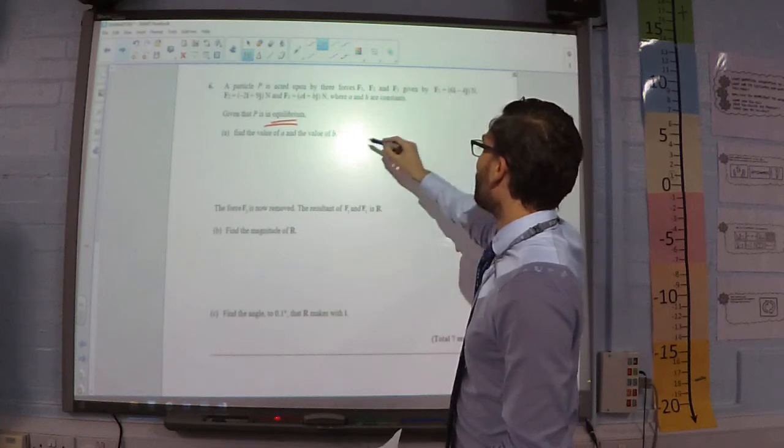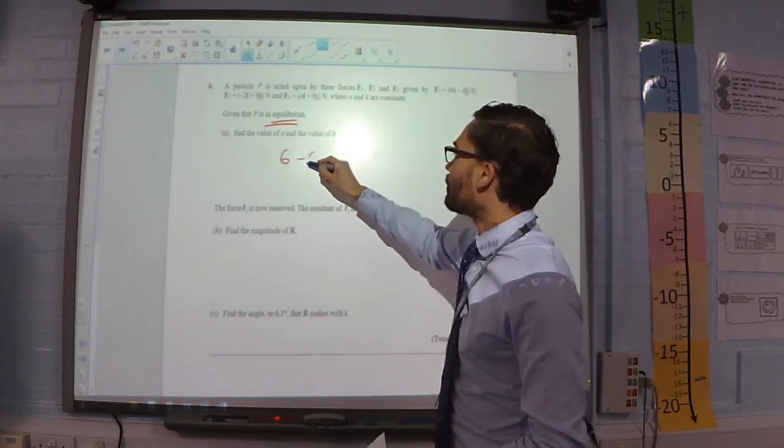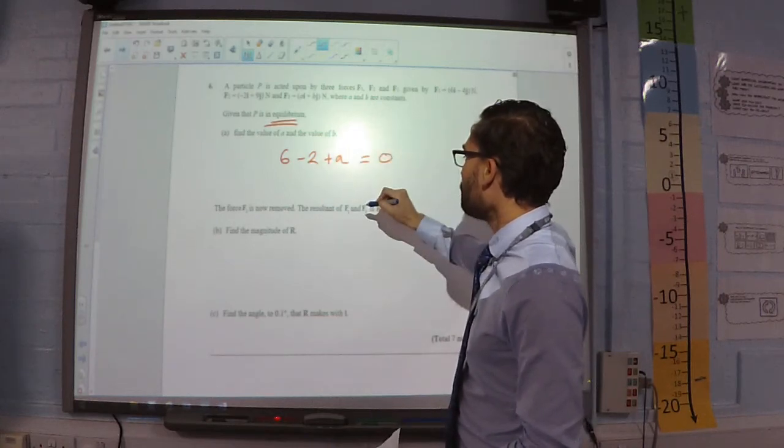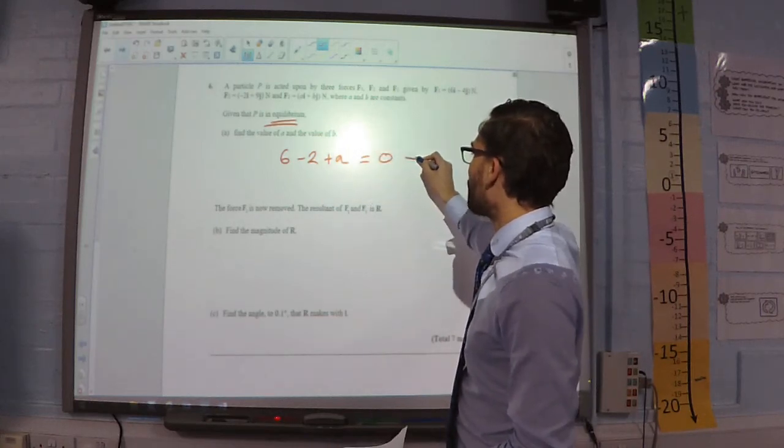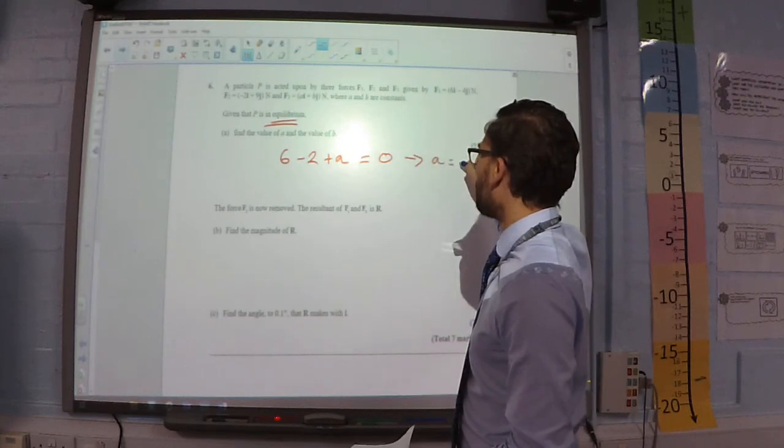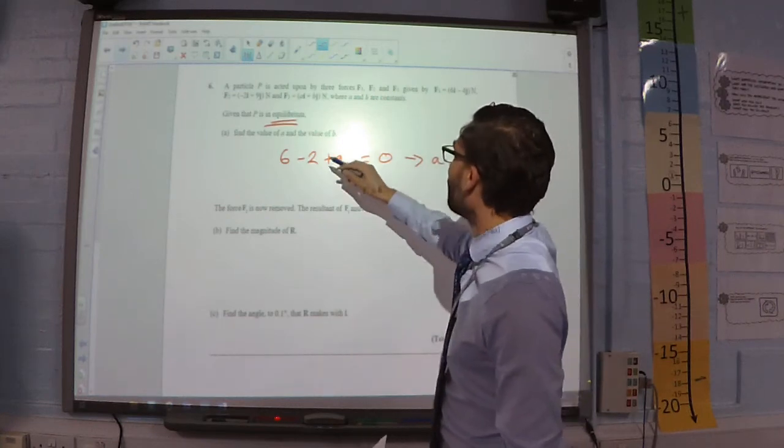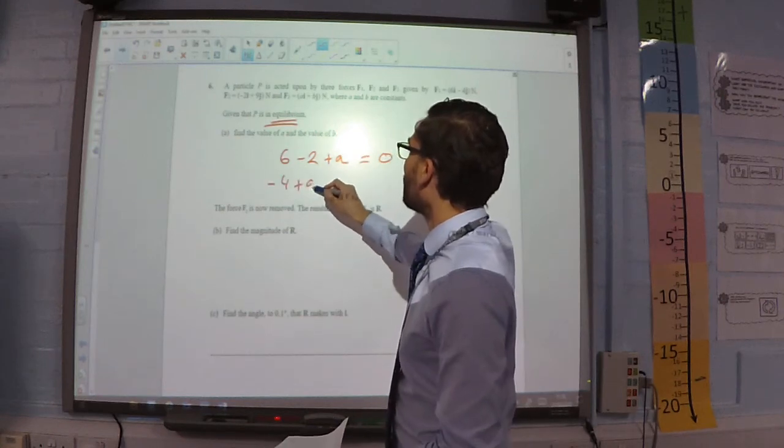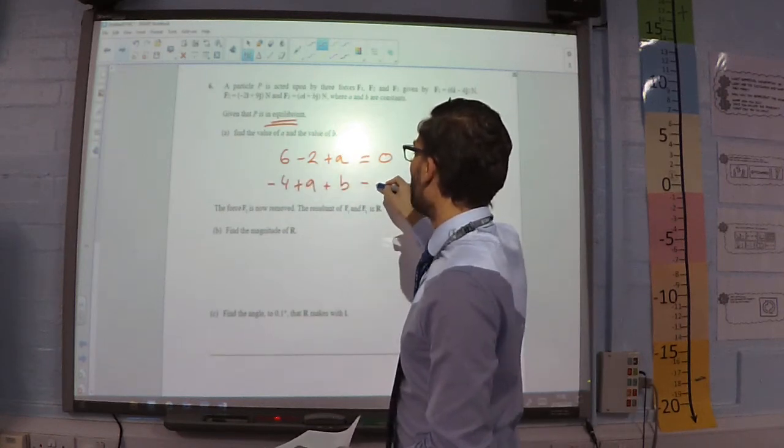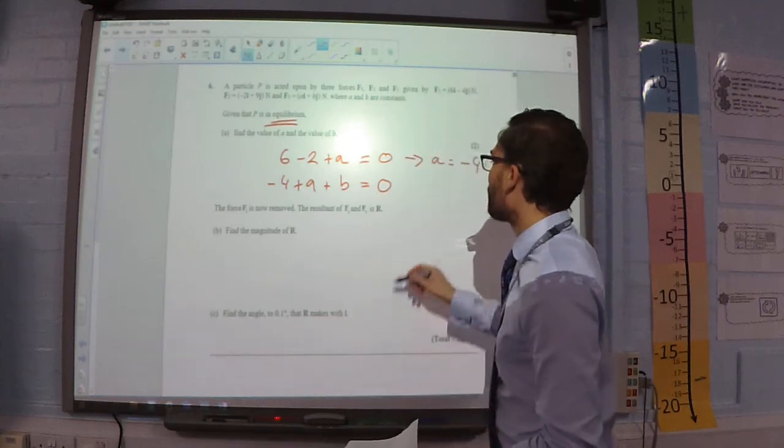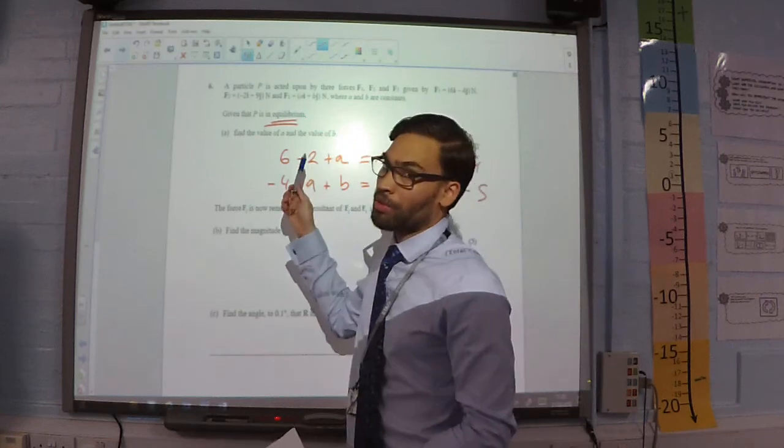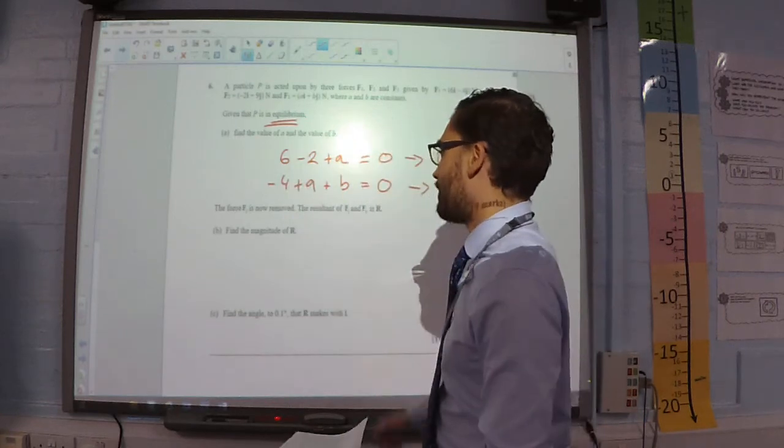If I look at my i components, 6 minus 2A must be 0. Which tells me that A is negative 4. And if I look at my j components, I've got negative 4 plus 9B is equal to 0. And that tells me that B has to be negative 5. So, if there's equilibrium, the resultant force is 0.